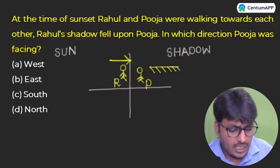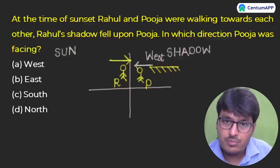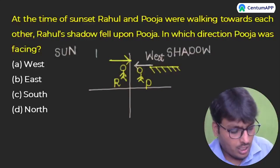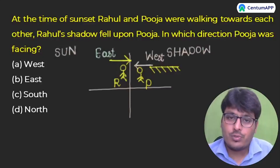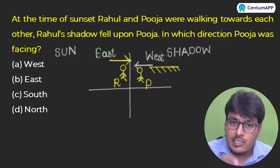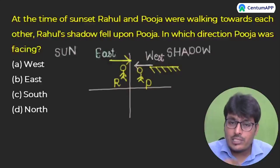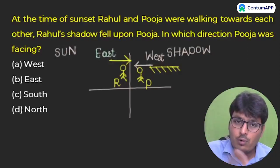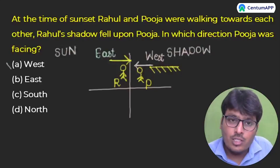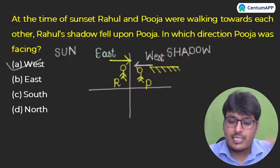So the shadow of Rahul fell upon Puja. Puja was facing in the west direction and Rahul was facing in the east direction. The Sun is behind Rahul, so the shadow appears in front of him where Puja is standing. Therefore, Rahul is facing east and Puja is facing west. The answer is option A: west.